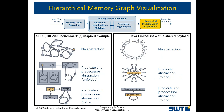Our visualization of a hierarchical memory graph displays vertices, i.e. objects as circles, and abstract vertices, i.e. sets of possibly abstract vertices as rectangles. Abstract vertices can be folded and unfolded on an individual basis to gradually adjust the level of abstraction. The user can decide whether no abstraction, only predicate abstraction, predecessor bag grouping, or both abstractions should be applied.